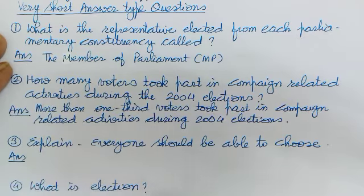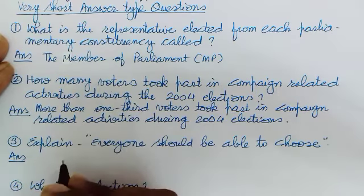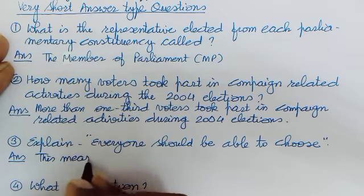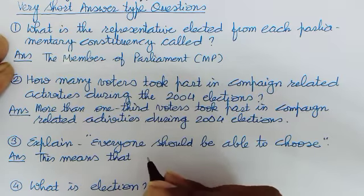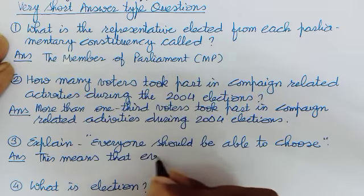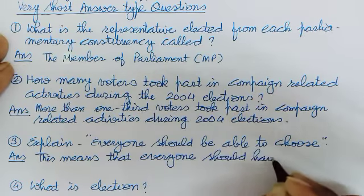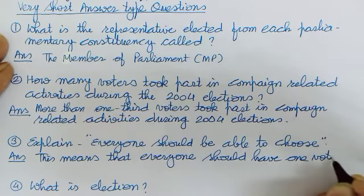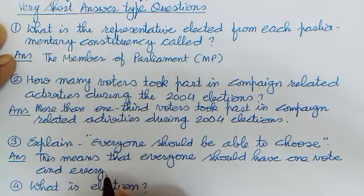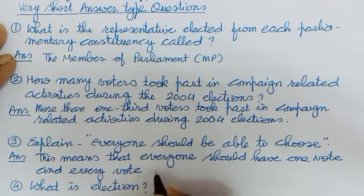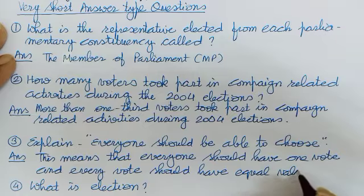Third question: explain 'everyone should be able to choose.' Yani, har ek ko chunne ka adhikar — iska matlab kya hai? This means that everyone should have one vote and every vote should have equal value. Sabko equal opportunity milni chahiye. Har ek vote ka same weightage hona chahiye.